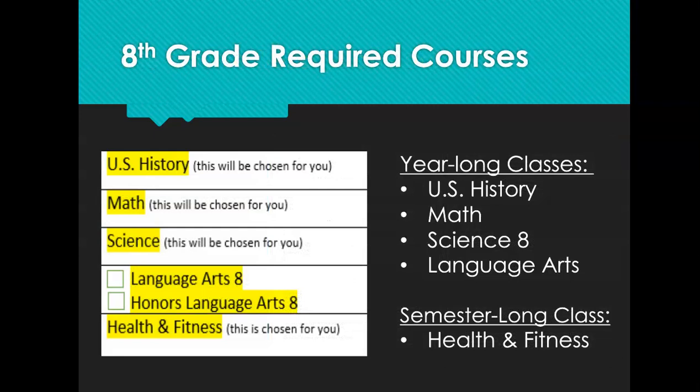There are some required courses that all 8th graders have to take, and these will be entered for you in Skyward. All 8th graders take US History, which is a year-long history class. All 8th graders take a year of math based on your level, which has been entered for you. All 8th graders take a year of 8th grade science. You get to choose between regular or honors language arts, and all 8th graders take one semester of health and fitness, just like in 7th grade.